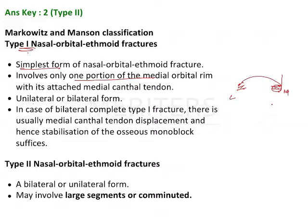Type 1 may be unilateral or bilateral — it can occur on one side or on either side. In the case of a bilateral complete Type 1 fracture, there is usual medial canthal displacement and hence stabilization of the osseous monobloc suffices.